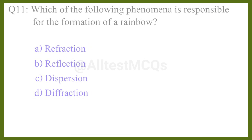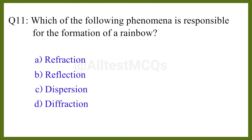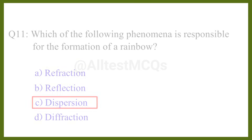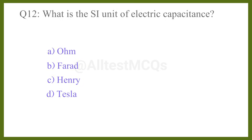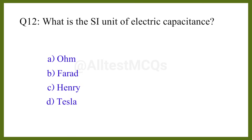Question number eleven: Which of the following phenomena is responsible for the formation of a rainbow? The correct answer is option C: dispersion. Question number twelve: What is the SI unit of electric capacitance? The correct answer is option B: Farad.